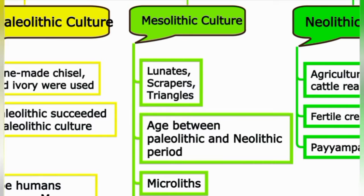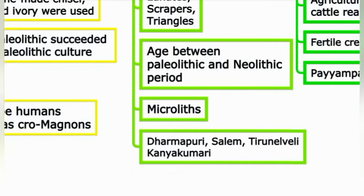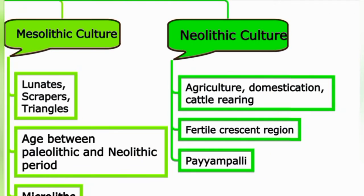The Mesolithic culture is the age between Paleolithic culture and Neolithic culture. During this time, microliths were very prominent. Mesolithic evidences can be found in Dharmapuri, Salem, Tirunelveli, and Kanyakumari. This is followed by the Neolithic culture, which introduced agriculture, domestication, and cattle rearing.